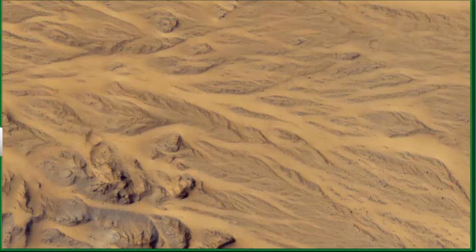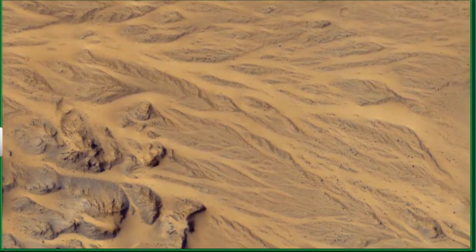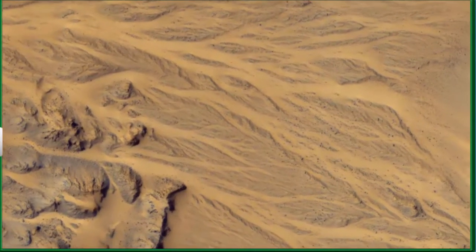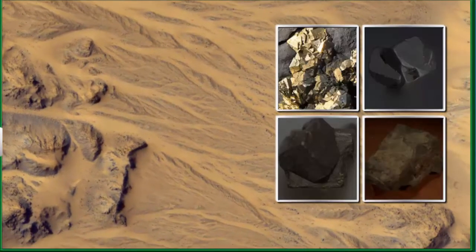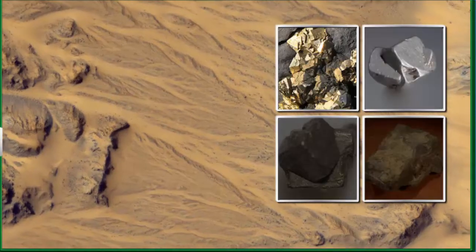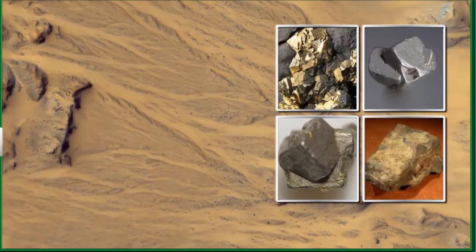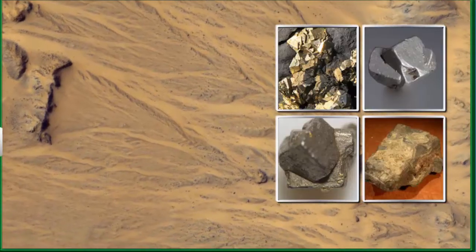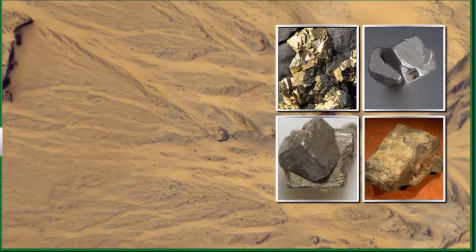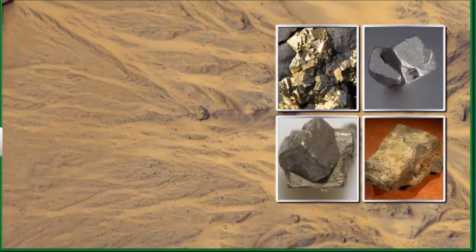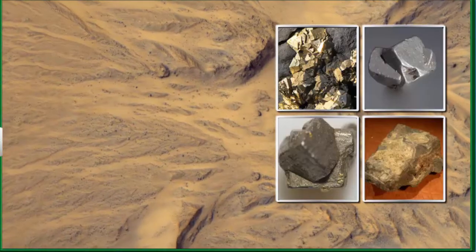We may not always have to dig very deep into the earth's crust to find minerals. Some metallic minerals like gold, silver, platinum and tin are found as alluvial deposits in the sand and soil in valleys. Such alluvial deposits are also called placer deposits.